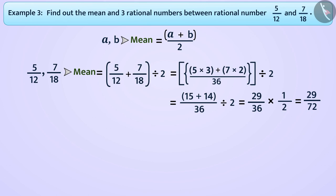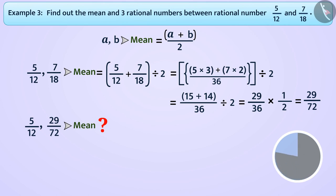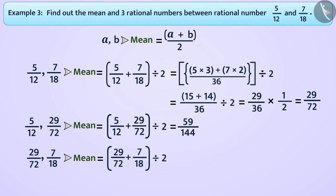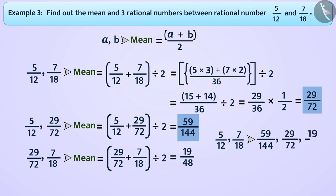Now, pause the video and try to find the mean of 5 by 12 and 29 by 72 by yourself. You will get the answer as 59 by 144. In this way, we can find the mean of 29 by 72 and 7 by 18. Their mean will be 29 by 72 plus 7 by 18 divided by 2, which equals 19 by 48. So the 3 rational numbers between 5 by 12 and 7 by 18 are 59 by 144, 29 by 72, and 19 by 48.